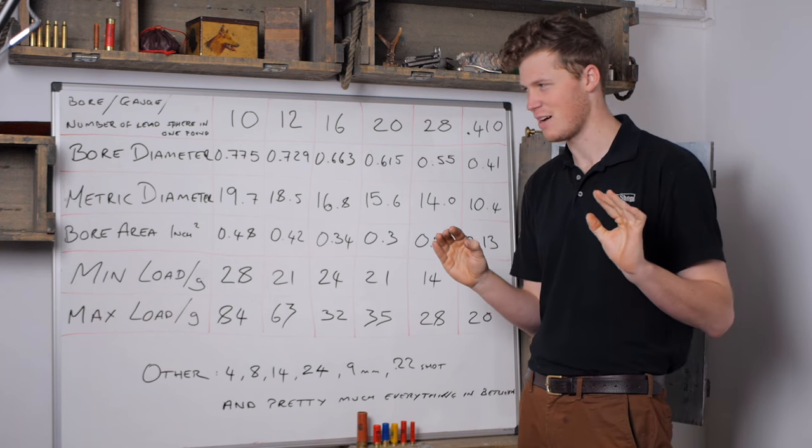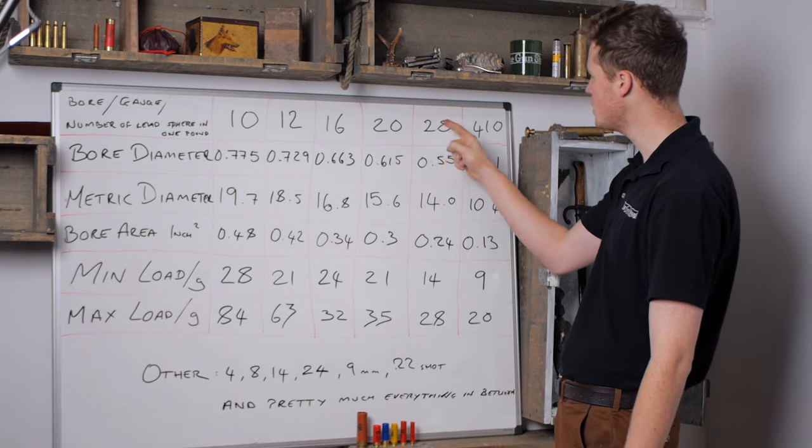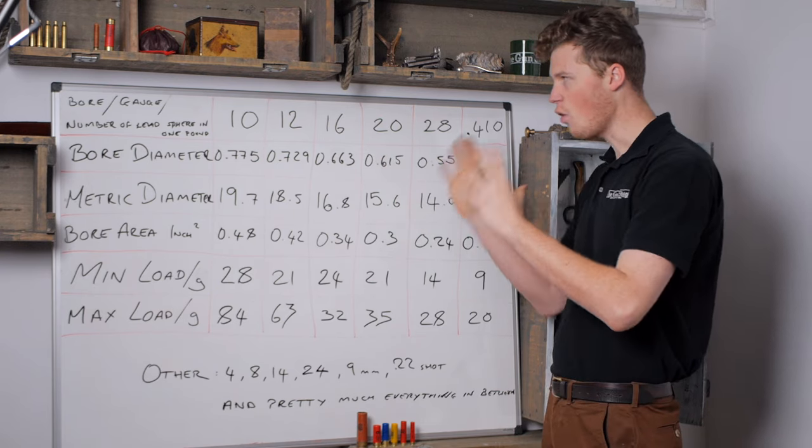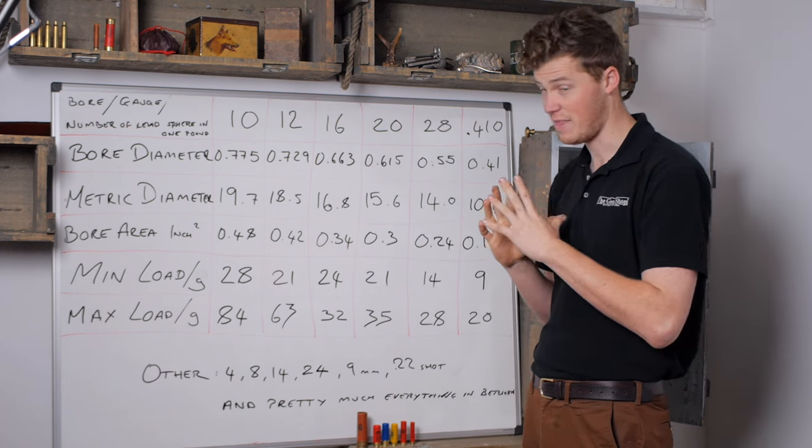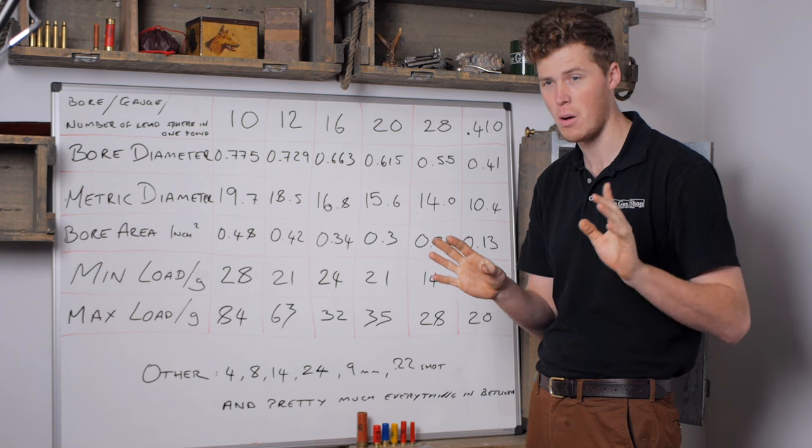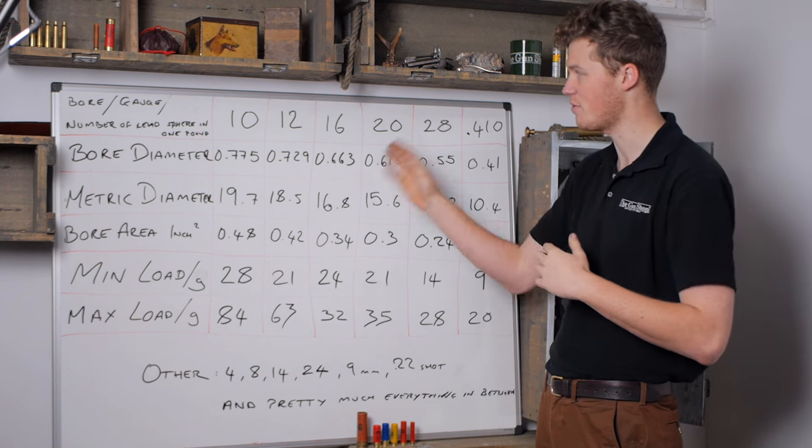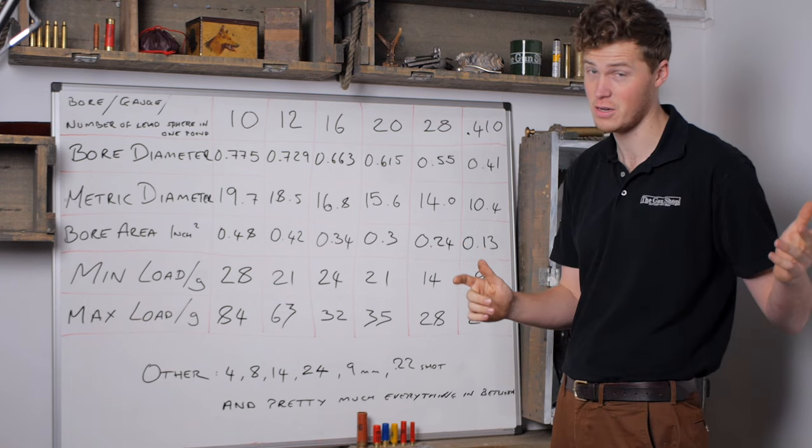So here we have the common and popular sizes of shotgun: a 10 bore, 12 bore, 16, 20, 28, and a .410. Obviously by the logic of number of lead spheres in a pound, you can, and people have over the years, made just about every caliber or bore under the sun, whether that be a 13 or 14, 15, 16, or 24. 24 is still fairly common on the continent.